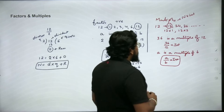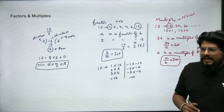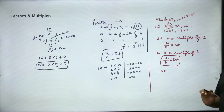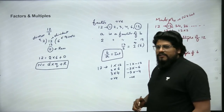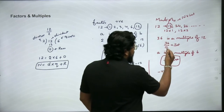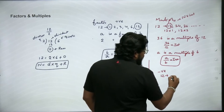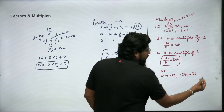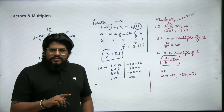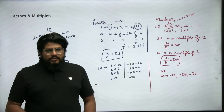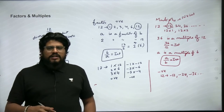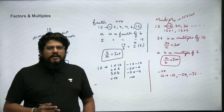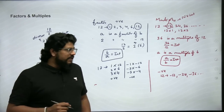Just like factors, negative multiples also exist. The negative multiples of 12 would be −12, −24, −36, and so on. Just like positive multiples, negative multiples exist too — unless specifically asked for positive multiples of 12. That covers factors and multiples.